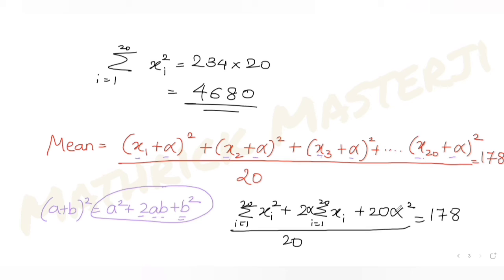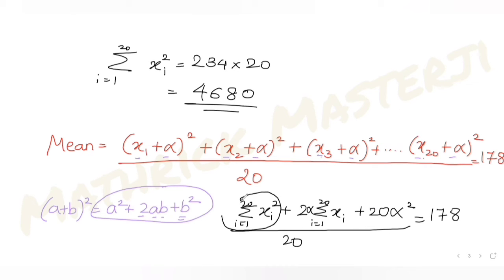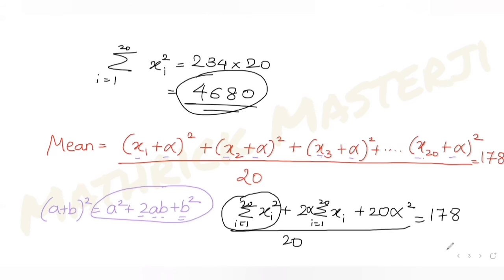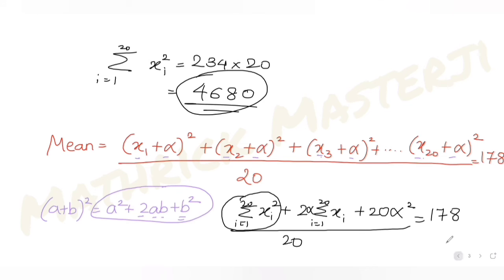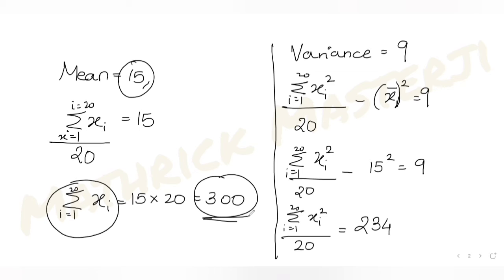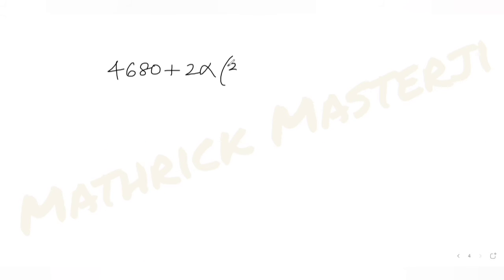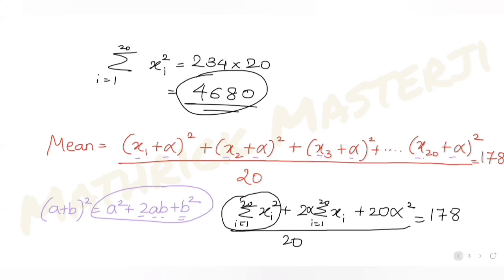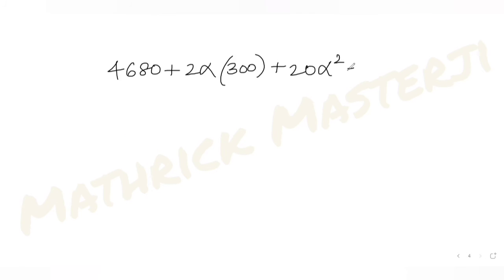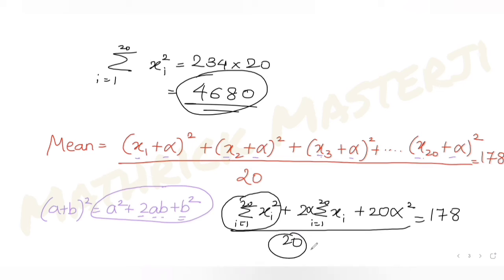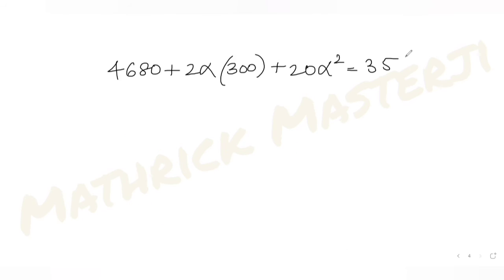Substituting known values: Σxi² = 4680, Σxi = 300. So: 4680 + 2α(300) + 20α² = 178 × 20 = 3560. This gives us: 20α² + 600α + 4680 = 3560.